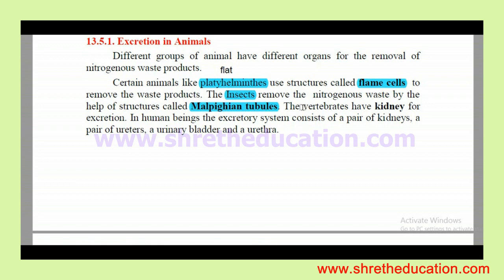In vertebrates, the kidneys are the excretory organs. Kidneys are responsible for excretion in human beings. The excretory system is an organ system consisting of a pair of kidneys, a pair of ureters, a urinary bladder, and a urethra.